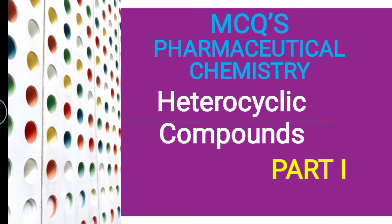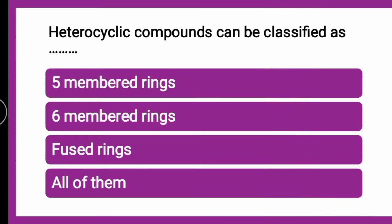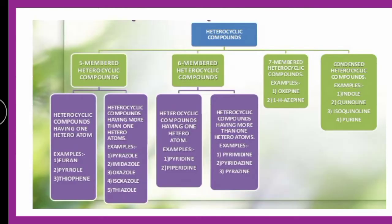The first MCQ: heterocyclic compounds can be classified as — whether 5-membered ring, 6-membered ring, fused ring, or all of them. The correct answer is all of them. Heterocyclic compounds can be classified as 5-membered heterocycle, 6-membered heterocycle, 7-membered, and fused ring or condensed heterocycles.